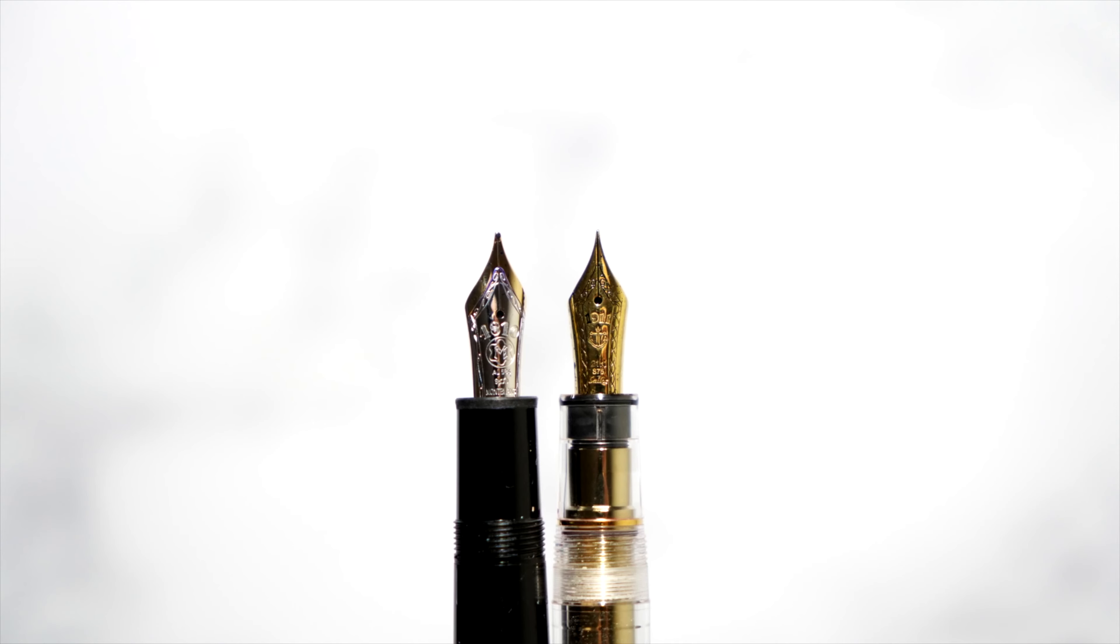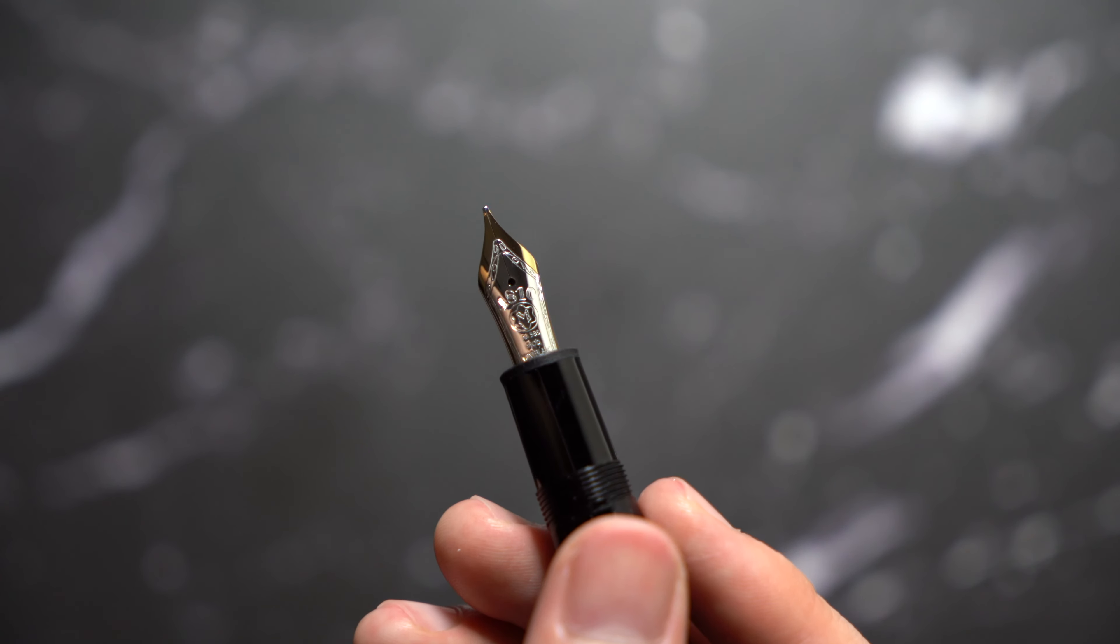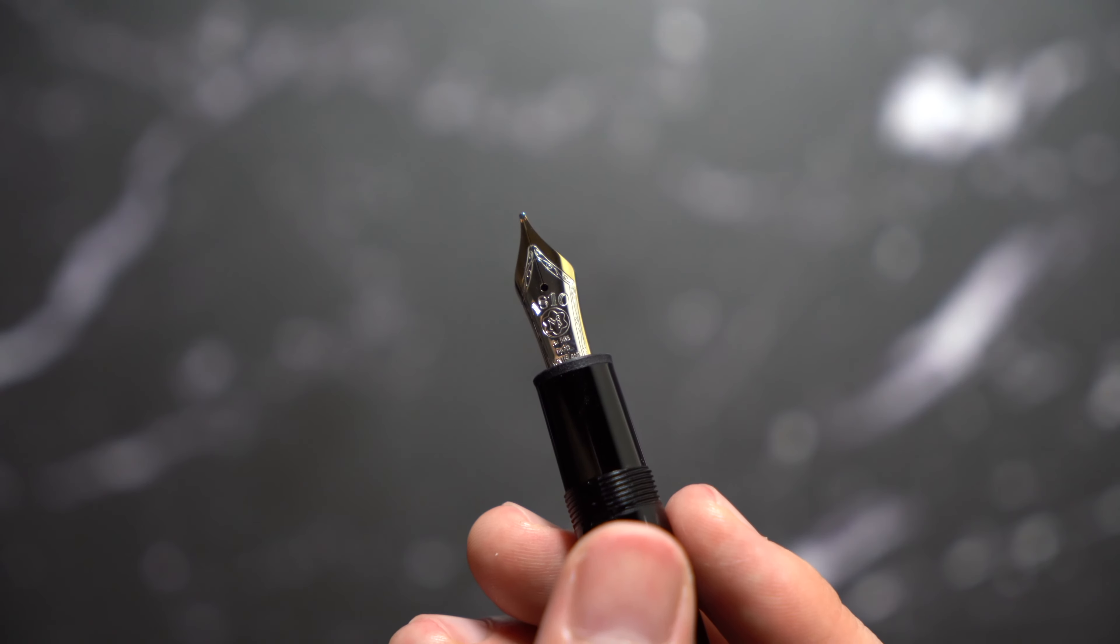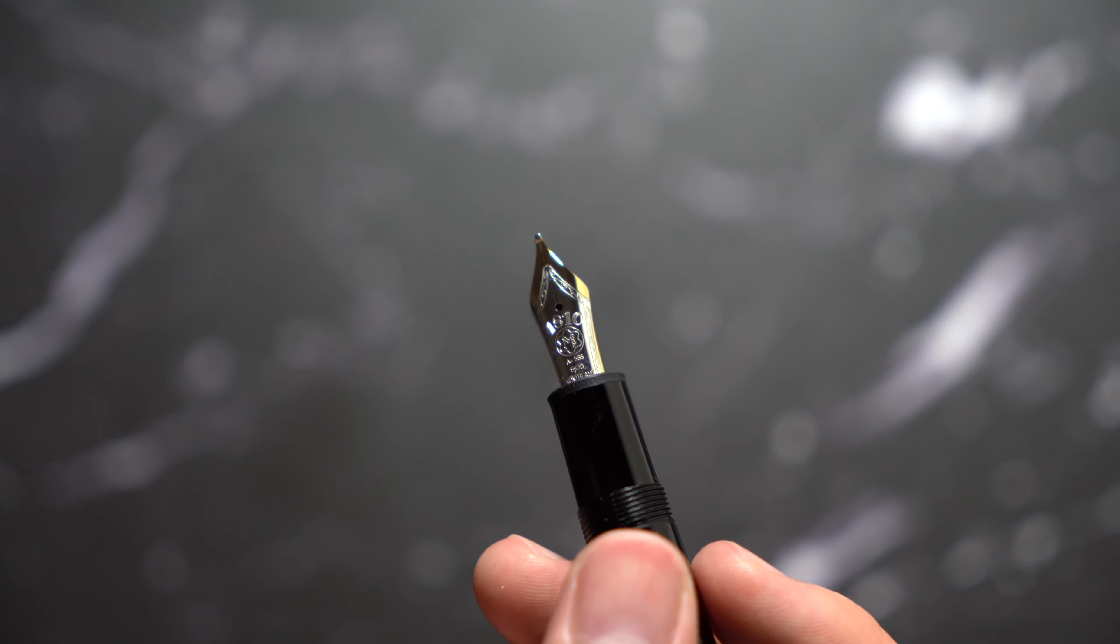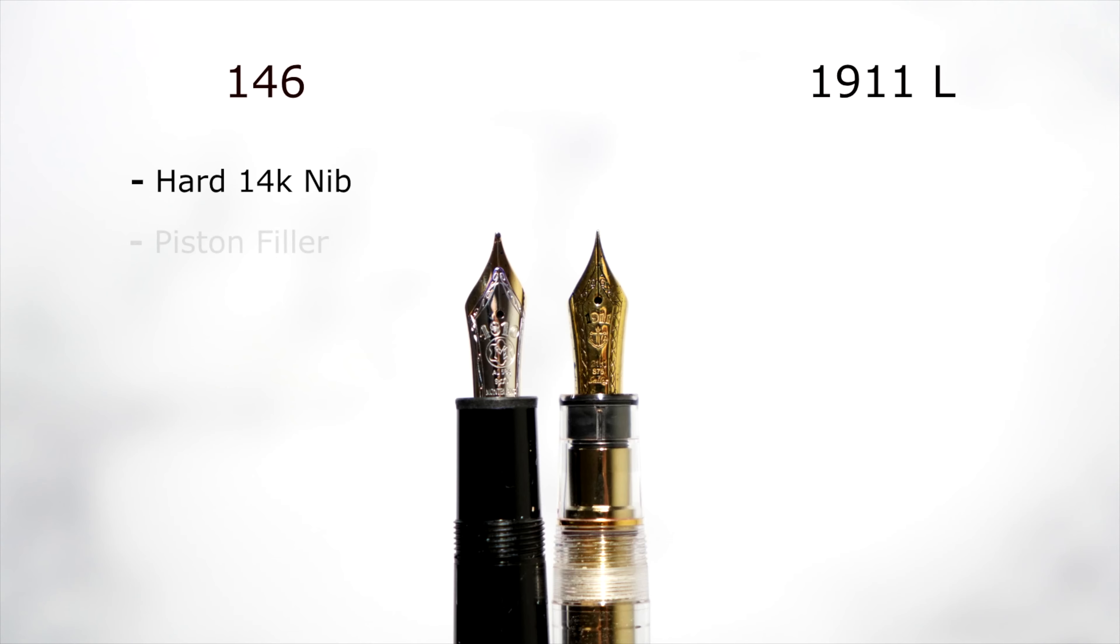Let's get into the pros and cons. Let's start with the 146. One pro of the 146 is the hard 14 karat nib. It's a reliable nib, as I mentioned, so you have no problem with that. There's slight feedback but it writes smoothly and it's a reliable nib. But expect feedback more than usual nibs. Next is the piston filler. It holds a lot more ink than the 1911 Large because it's a piston filler, so it's convenient for having more ink.